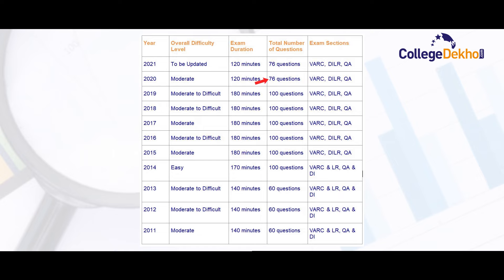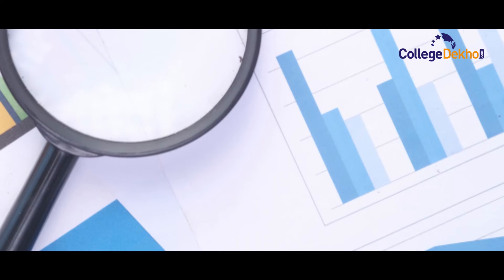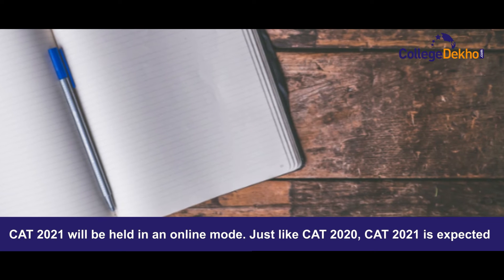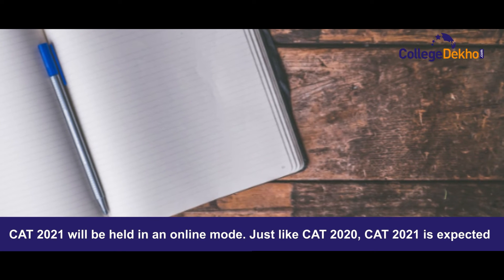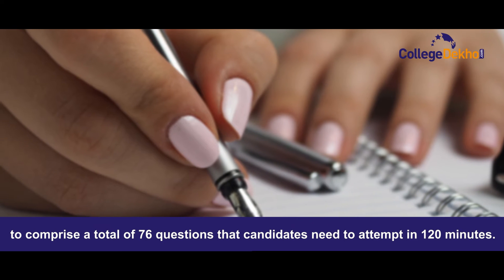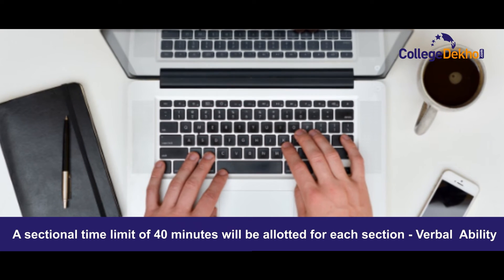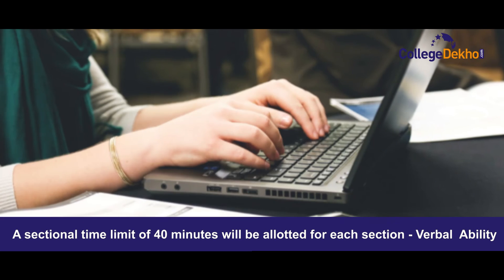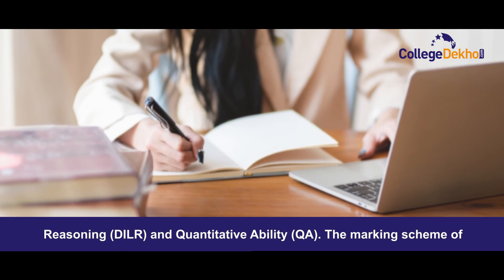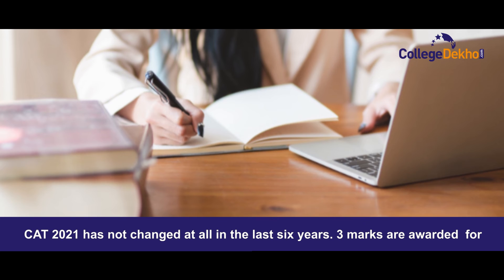CAT 2021 will be held in online mode in three slots, just like CAT 2020. CAT 2021 is expected to comprise a total of 76 questions that candidates need to attempt in 120 minutes. A sectional time limit of 40 minutes will be allotted for each section: Verbal Ability and Reading Comprehension, Data Interpretation and Logical Reasoning, and Quantitative Ability.